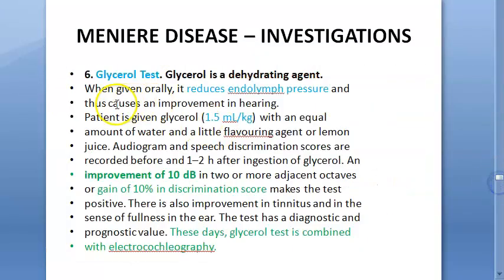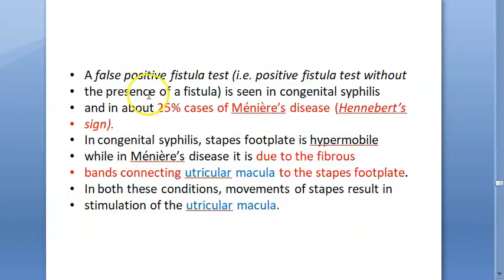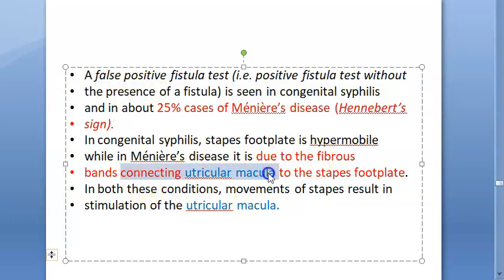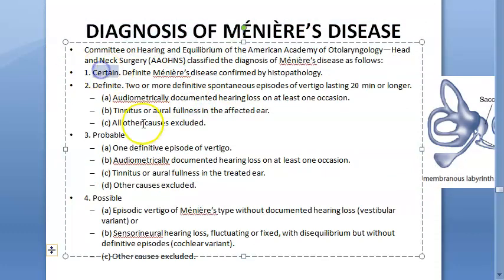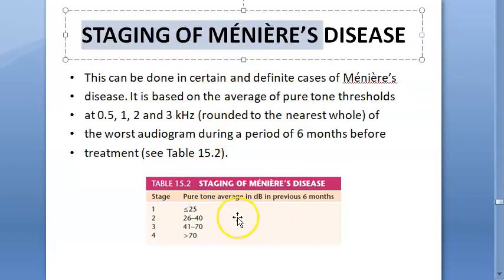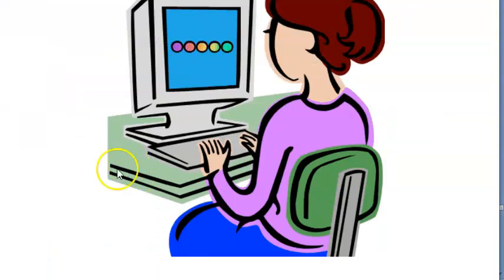Caloric test shows reduced response. Glycerol test, combined with electrocochleography, demonstrates improvement of 10 dB or 10% in discrimination score due to reduced endolymphatic pressure. Fistula test gives a false positive due to fibrous bands connecting the utricular macula to the stapes footplate. Diagnosis levels: certain by histopathology, definite by full symptom criteria, probable by number of episodes, possible by isolated vertigo or hearing loss. Staging is based on pure tone average — Stage 1 less than 25 dB, Stage 4 greater than 40 dB.